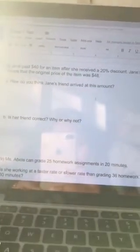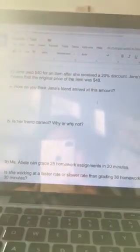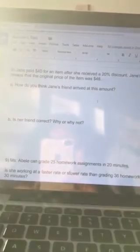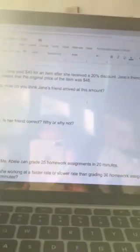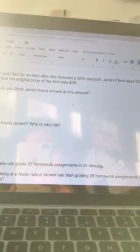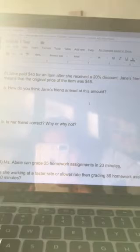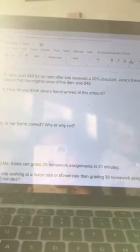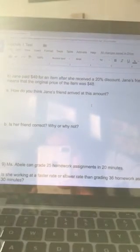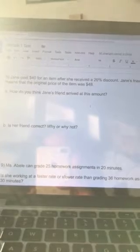Alright, number 8. Again, sorry for the lighting. So number 8 says, Jane paid $40 for an item after she received a 20% discount. Jane's friend says this means the original price of the item was $48. How do you think Jane's friend arrived at this amount?